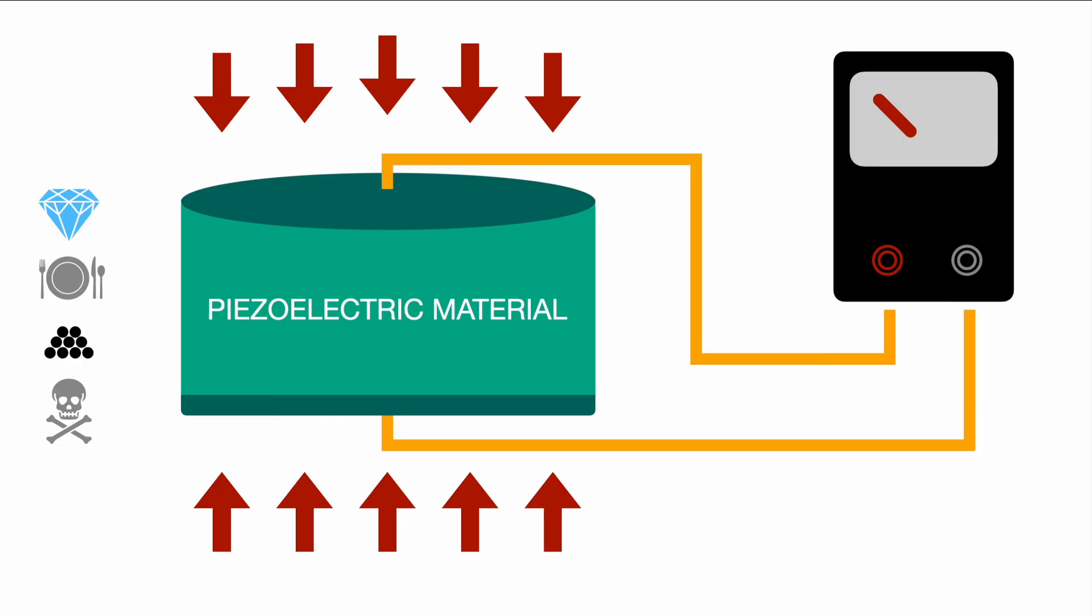But to keep it simple it's mainly crystals, ceramics and some sort of plastics. While we are applying the external force on the vertical axis and also the voltage is being created on the vertical axis, there's also a version where you can apply the force on the vertical axis but the voltage is actually created on the horizontal axis or even on a diagonal axis. This all depends on the certain crystal, ceramics or whatever material you're using and how you actually orientate it within the element.